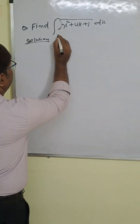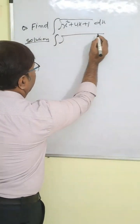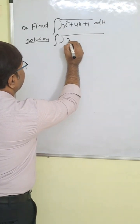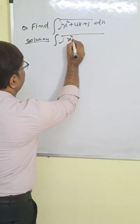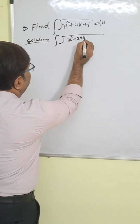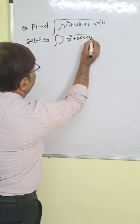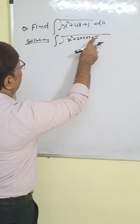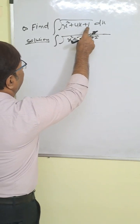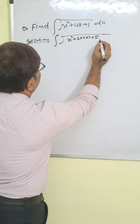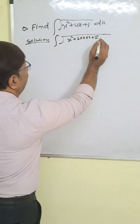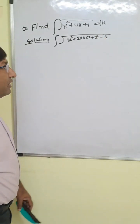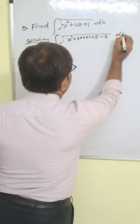So here we write integration of root under x square plus 4x plus 1. We can write x square plus 2 times x times 2, so 2a equals 4x, meaning a equals 2. So we need 2 square equals 4, but here only 1, so 4 minus 1 is 3. We have an extra 3, so it becomes minus 3. So 4 minus 3 is 1, and now it is dx.